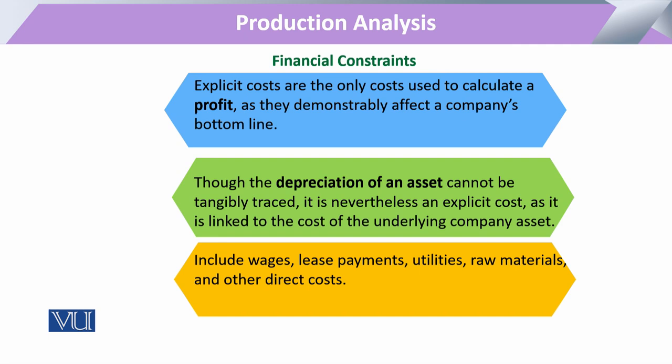There are some costs that are not fully tangible or might be only slightly tangible — not as obvious, but still costs we have to account for. For example, the depreciation of an asset: over time, any input like machinery never performs in perfect form. This is what we call wear and tear of machinery. There is also building maintenance cost that you have to pay. These depreciation costs are not so tangibly traced or assessed, but they do appear in budgets and ledgers.